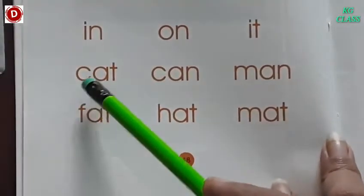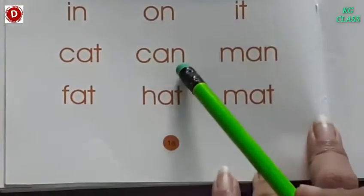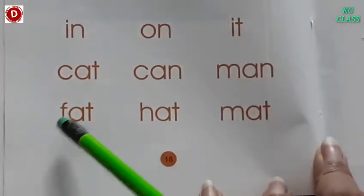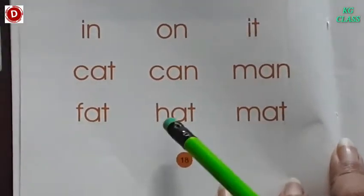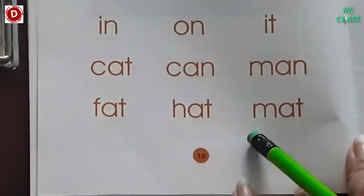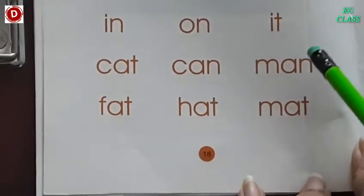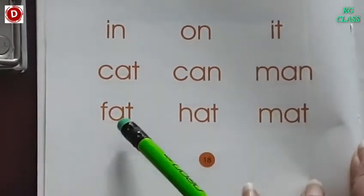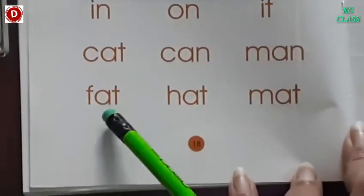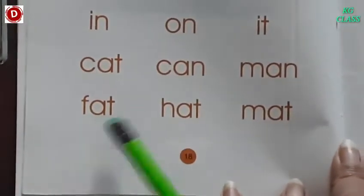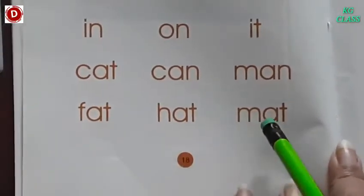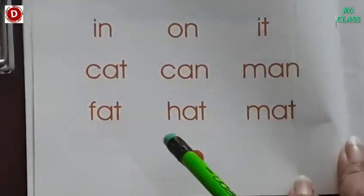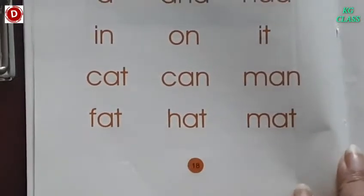Now let's read these three-letter words. K-at, a cat. K-an, can. M-an, man. F-at, fat. H-at, hat. M-at, mat. Children, do you remember? These words are from our last story — the fat cat story. The cat was fat and she was in the hat, and the hat was on the mat. So now you remember, isn't it? We have revised those words from story number one.